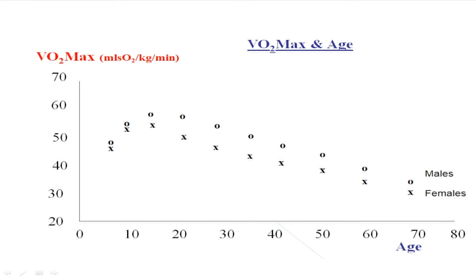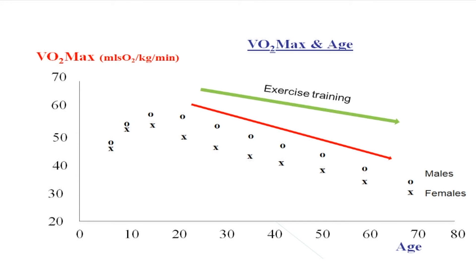As mentioned earlier, VO2 max does decrease with age for a whole range of circulatory, pulmonary, and musculoskeletal reasons. As we age, the graphs for males and females get a little closer together in the 50s, 60s, 70s and 80s, so the difference between males and females is not quite as pronounced as in the 20s, 30s, and 40s age group. However, what we do know is that with exercise training, we can significantly offset that natural decrease in VO2 max.